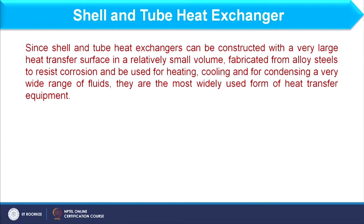This heat exchanger can be fabricated from alloys of steel which resist corrosion, and it can be used for heating, cooling, and condensing a very wide range of fluids. The conclusion is that a shell and tube heat exchanger is not only used as a heat exchanger to transfer sensible heat — it is also used to transfer latent heat, and therefore it can be used as a condenser and reboiler along with process-to-process heat exchangers. Because of all these advantages, these heat exchangers are most widely used in chemical plants as heat transfer equipment.